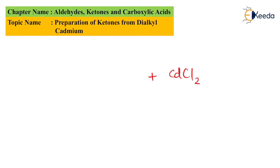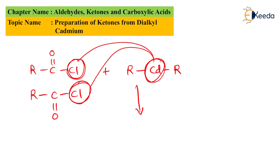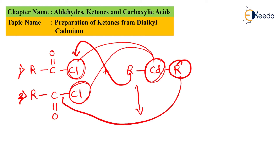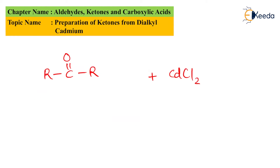The main product obtained is RC(=O)R. Since we used two moles of acyl chloride — the first and the second molecule — one R group attaches to the first carbonyl carbon and the next R attaches to the second carbonyl carbon, giving two moles of ketone. This is how we can easily prepare a ketone using dialkyl cadmium.